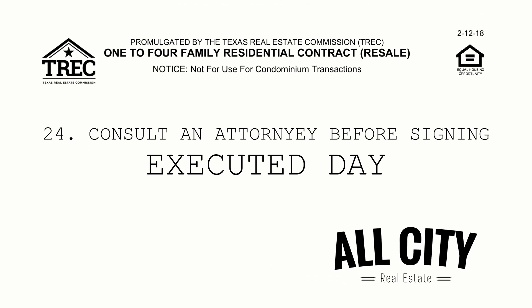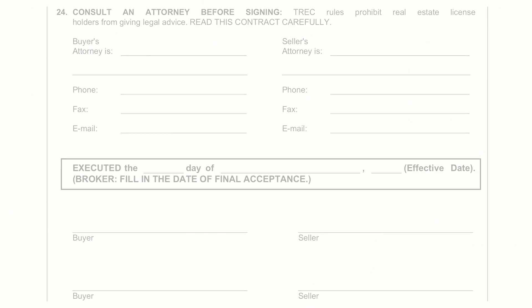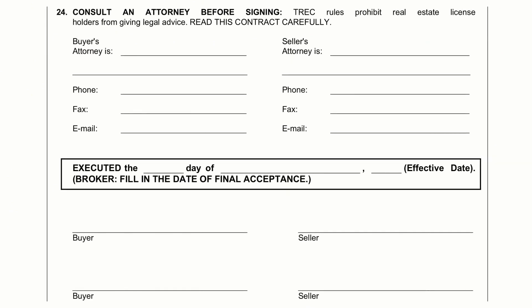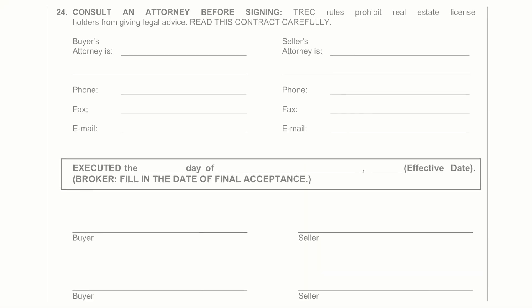Just below paragraph 24, you will see a big bold black box that is included for filling in the executed date of the contract. Now the executed date of the contract is a very commonly misunderstood and incorrectly used portion of the contract.